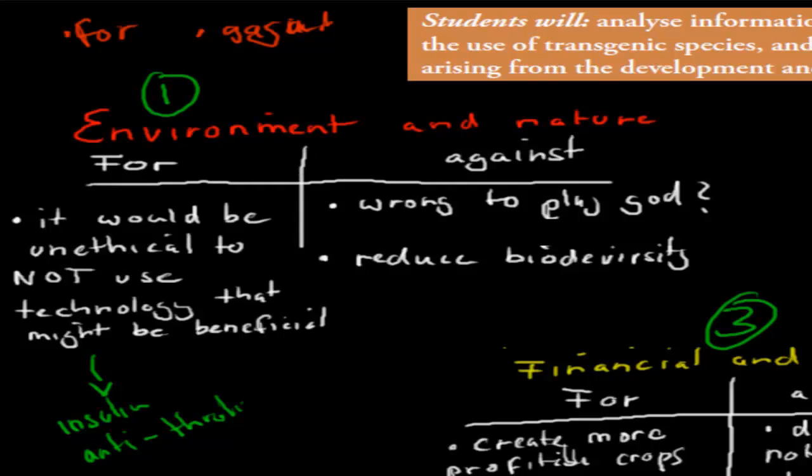Now, some of the most obvious ones against it, is it wrong to play God? Here we are selecting things, we are changing species, we are doing things which are not natural at all. Is it wrong to do what we want to do? We don't really think about the animal, is that wrong, or is that right? Should we do that? So that would be a point against it. Is it wrong to play God? I think that's obviously a good question.